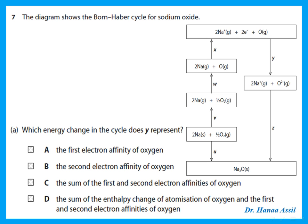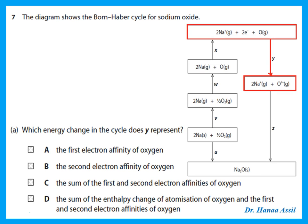The diagram shows the Born-Haber cycle for sodium oxide. Y represents the change from gaseous oxygen atoms to O²⁻. Since the oxygen atom gains two electrons, Y represents the sum of the first and second electron affinities of oxygen.